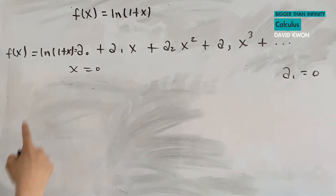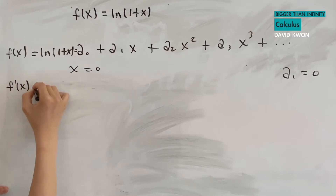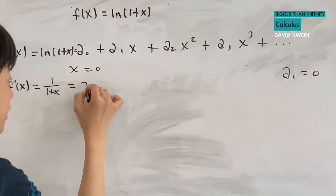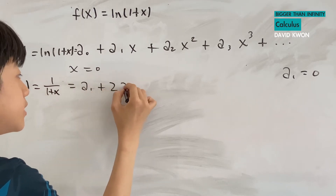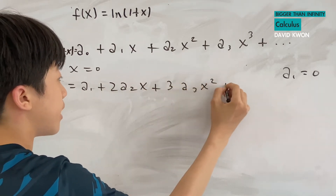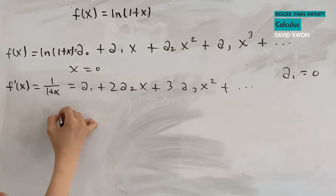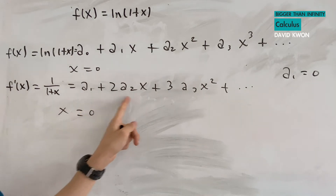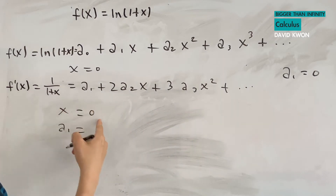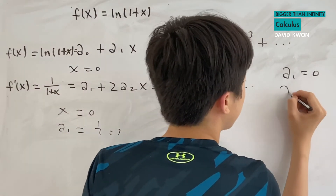Now I will differentiate this function, so f′(x) is equal to 1/(1+x), which equals a₁ plus 2a₂x plus 3a₃x² plus dot dot dot. When I set x equal to zero, all other terms vanish, leaving a₁ equal to 1 over 1, which is just 1. So our a₁ is 1.